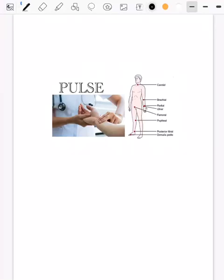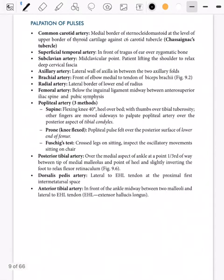In this video we will be talking about where do you palpate for peripheral pulses. In general physical examination, we have a habit of saying the pulse rate and then we always say all peripheral pulses felt. This is one place where examiners can easily catch you if you don't know where to palpate the remaining pulsations. We'll move from top to bottom.